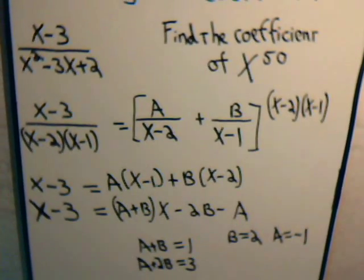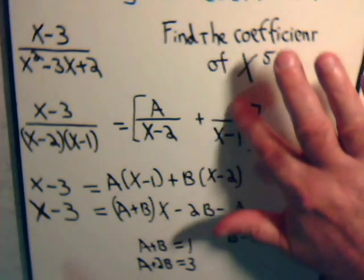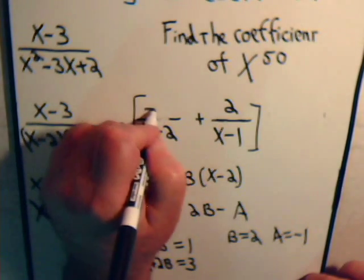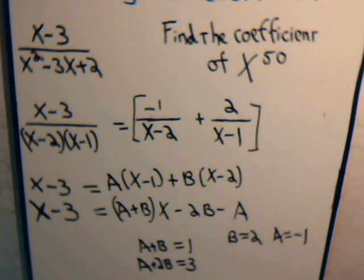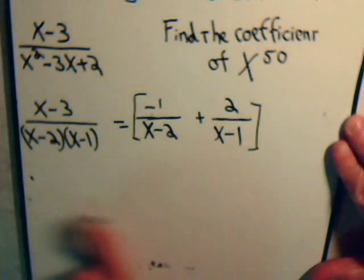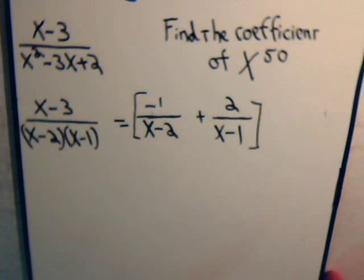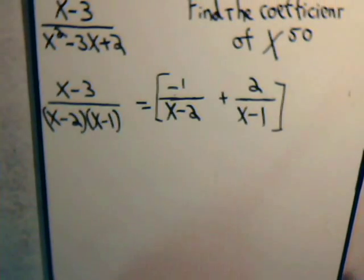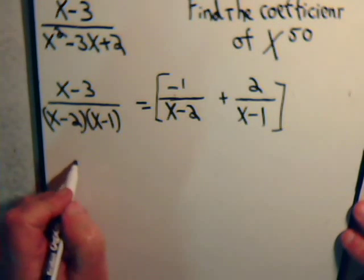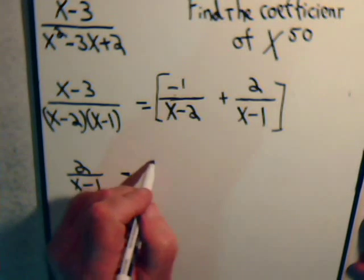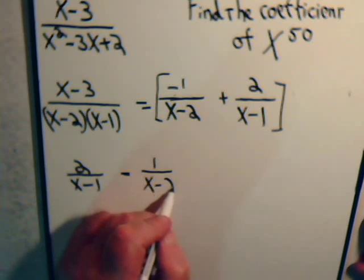So we've determined what a and b is. So let's go back to here. We don't need this. b is equal to 2, a is equal to negative 1. And before we proceed any further, let's make some room. So now our problem initially was find the coefficient of x to the 50th in this expression, and this is equal to this. And again, we determined that using the method of partial fractions.